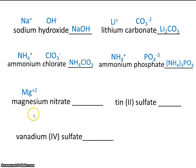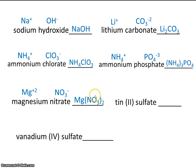Magnesium has a charge of plus 2 and nitrate has a charge of minus 1. Using the zigzag method, we need 2 nitrates. The formula is Mg(NO₃)₂. The parentheses are essential — without them it would read NO₃2, which we don't want. The subscript 2 outside the parentheses tells us we have 2 nitrates, where nitrate is NO₃.